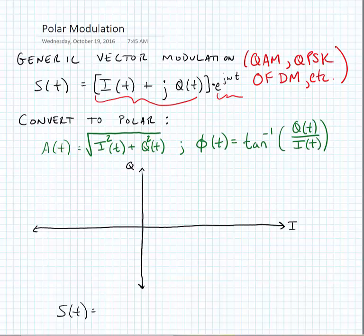So in the polar coordinate system, A(t), the amplitude vector, is equal to the square root of the sum of the squares of the Cartesian components I and Q. And φ(t), the phase modulated vector, is equal to the inverse tangent of Q over I.